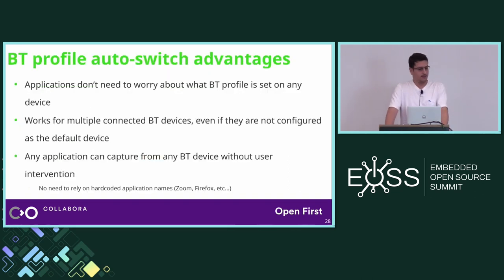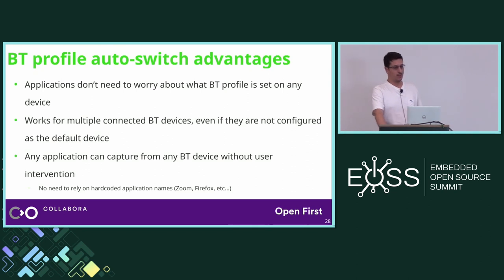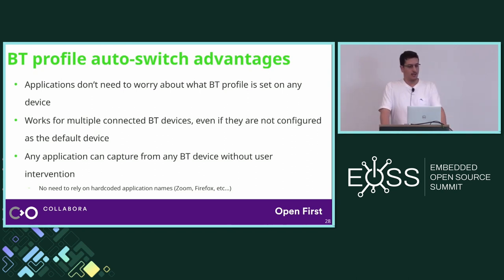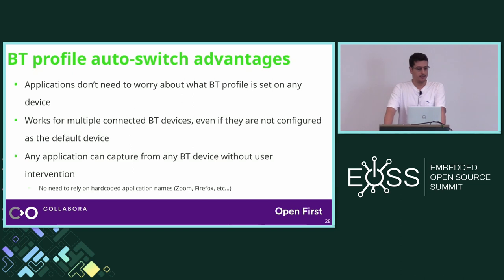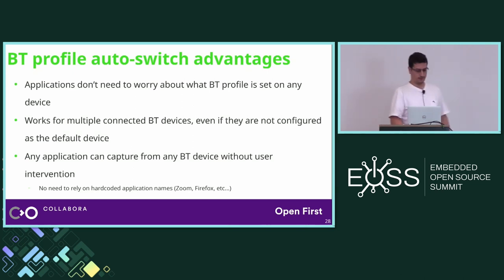The advantage of this approach is that Bluetooth profile auto-switching just works out of the box. Applications don't need to worry about what Bluetooth profile is set on any device, and it works with multiple connected Bluetooth devices even if they are not configured as the default device. Any application can also capture from any Bluetooth device without user intervention, and there's no need to rely on hard-coded application names.